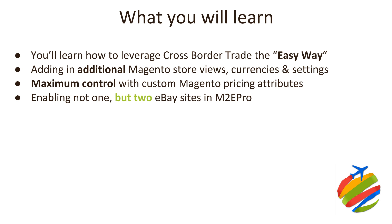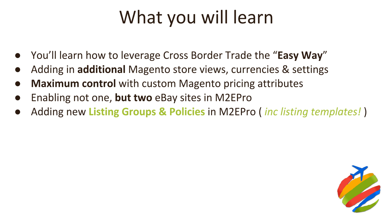We're also going to be enabling not just one but two international eBay sites in M2e Pro — specifically eBay Australia and eBay Germany. We chose two tough ones: one is in Australian dollars, and the other is in a completely different language and currency. We'll then show you how to add the new listing groups and policies in M2e Pro for these two new eBay sites.